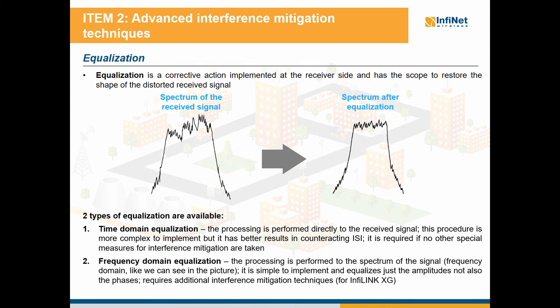The second type is frequency domain equalization, which is more simple and only equalizes the amplitudes, not the phases. This means that the processing is performed in the frequency domain, so the signal has to be converted first to frequency domain in order to obtain its spectrum. This type of equalization is used for example by InfiLink XG.